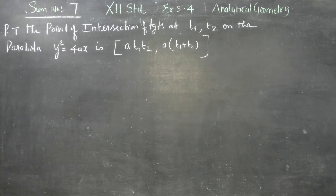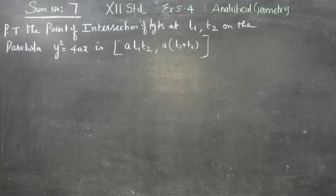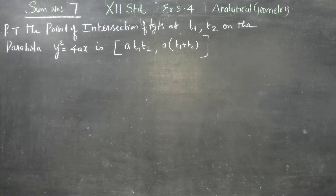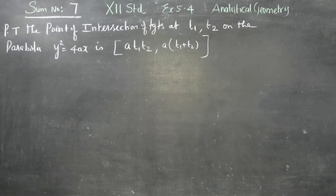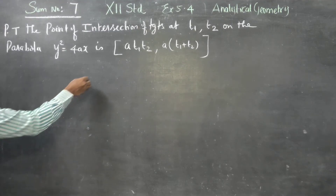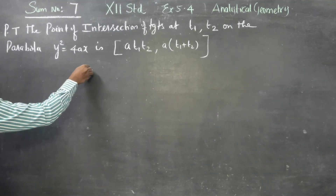Dear 12th standard students, in exercise number 5.4, sum number 7, prove that the point of intersection of the tangents at T1 and T2 on the parabola y² = 4ax is (aT1T2, a(T1+T2)). Consider this parabola.